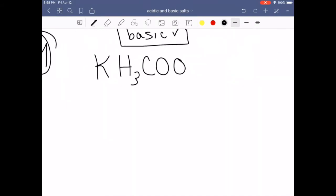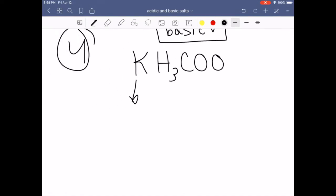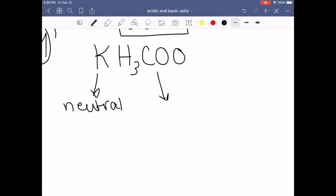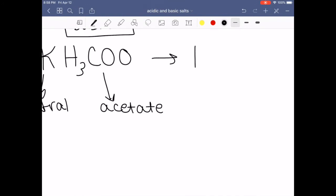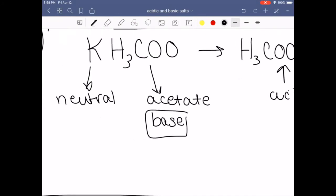All right, last example. So here we have potassium. So this is one of the row one or twos, which means it's neutral. This, on the other hand, most of my students will know, is acetate. Acetate forms acetic acid in solution, which is an acid, meaning this acetate ion is a base. So overall, this salt is basic.